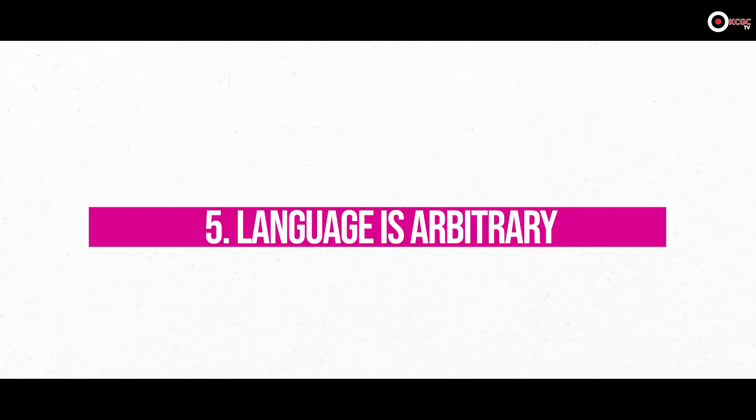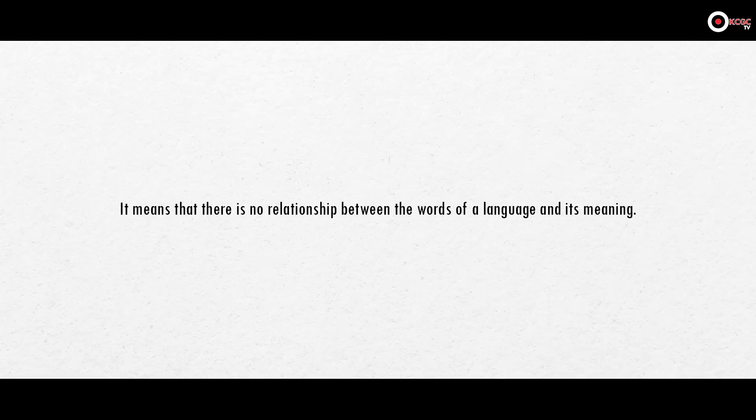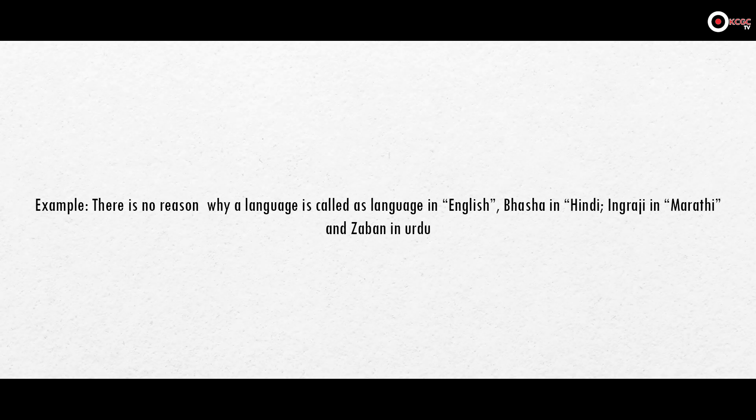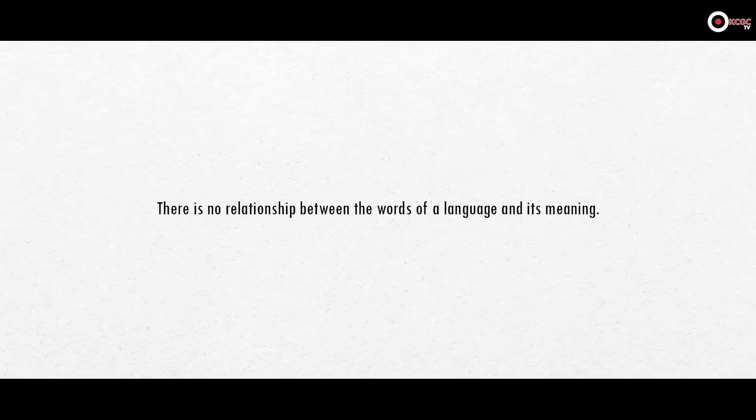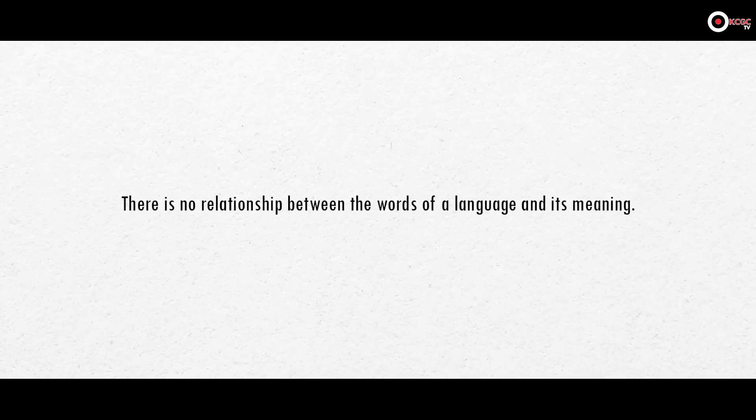Next, language is arbitrary. Arbitrary means there is no relationship between the words of a language and their meaning. For example, what we call 'language' in English is called 'boli' in Punjabi, 'bhasha' in Hindi, and 'zuban' in Urdu — there is no fixed rule. Similarly, 'woman' in English is 'mahila' in Hindi and 'aurat' in Urdu. There is no hard and fast rule — this is what arbitrary means. There is no relationship between the words of a language and its meaning.